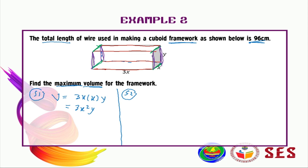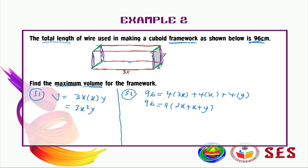So the second step gives us: 96 is equal to the sum of all the edges, which is 4 times 3x plus 4 times x plus 4 times y. Factoring out 4, we get 4 times (3x plus x plus y). Dividing both sides by 4 gives 24 equals 4x plus y, so y equals 24 minus 4x.